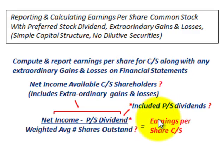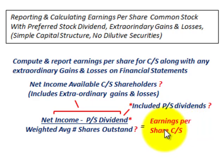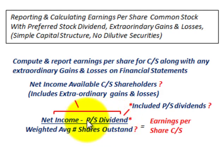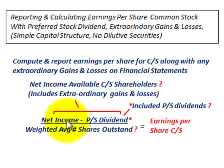For our general formula or equation for earnings per share on common stock, we start out with our net income, subtract out any preferred stock dividends, and divide that by the weighted average number of shares outstanding. Each of these items we have to determine what they are.